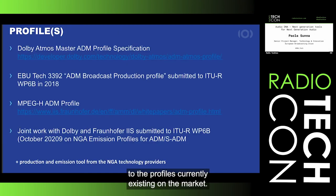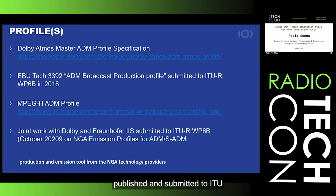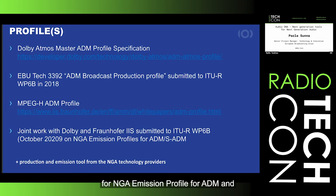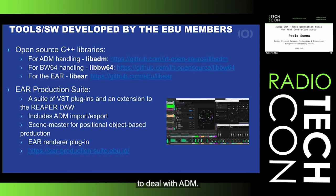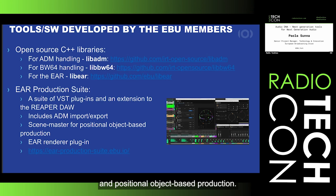This is a recap of profiles currently existing on the market: the Dolby Atmos Master ADM Profile Specification, the EBU ADM Broadcast Production Profile published and submitted to ITU in 2018, the MPEG-H ADM Profile, and joint work with Dolby and Fraunhofer on NGA emission profiles for ADM and serial ADM. EBU members, in particular BBC R&D, have also developed tools and software for ADM, including a C++ library to parse and handle ADM files, and the EAR Production Suite — a set of VST plugins and an extension to the REAPER digital audio workstation for ADM import, export, and positional object-based production.